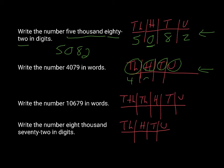So you've got 4079. So that means you've got four thousand, zero in the hundreds column so we don't have to say anything about that, and then we've got 79 here. So 4,079.